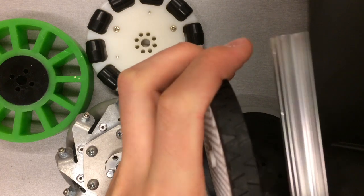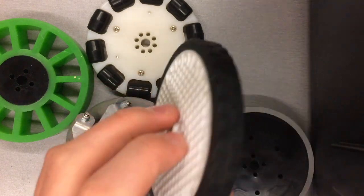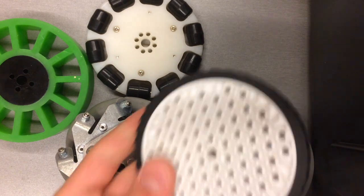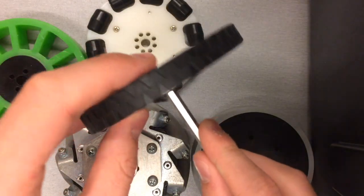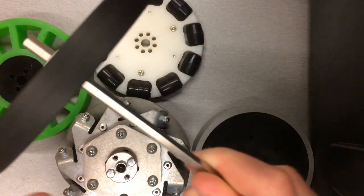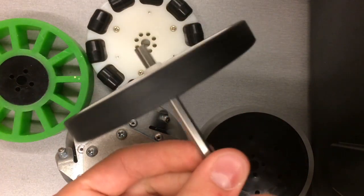This wheel is the same thickness as a rev extrusion. It also has a hex hub which makes it very easy to attach rev axles to it.